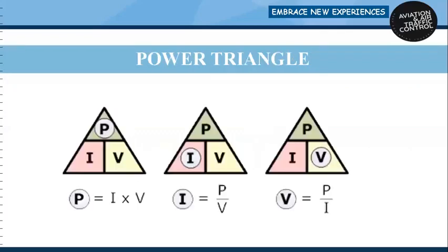The power triangle: at the top is P and at the bottom are I and V. Power equals I times V. If we need to find a bottom quantity, we divide the top quantity by the other bottom value. So I equals P divided by V, and V equals power divided by current.